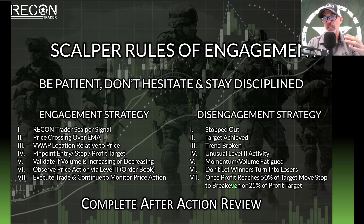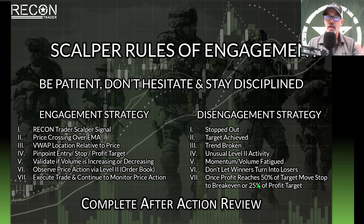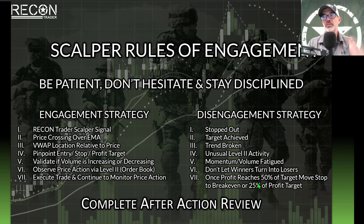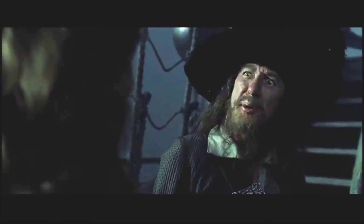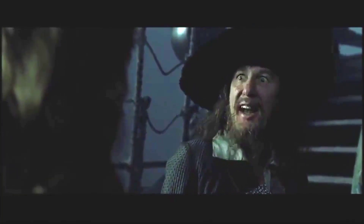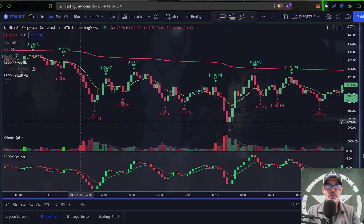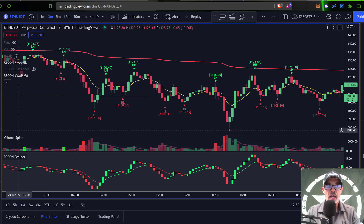By moving my stop to break even or maybe 25% of the total profit target, I can at least either break even — not incur a loss — or lock in a little profit, while still letting the trade have the opportunity of reaching my profit target. That pretty much wraps up my scalper's rules of engagement — the code is more what you call guidelines than actual rules.